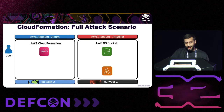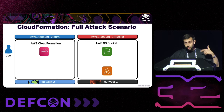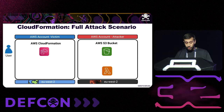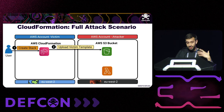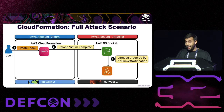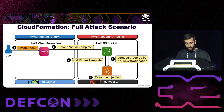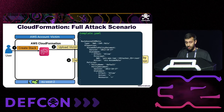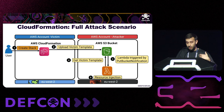To visualize the full attack: the attacker is in an external account and creates an S3 bucket that CloudFormation will try to use, plus a Lambda that will backdoor any file dropped to that bucket. Whenever the user creates a stack, CloudFormation uploads the victim's template to the attacker's S3 bucket, the Lambda is triggered and retrieves the template, then performs a resource injection — injecting an admin role that can be assumed by the attacker — and writes the backdoored template back to the bucket.